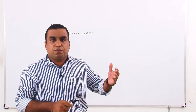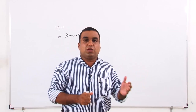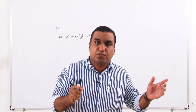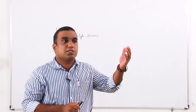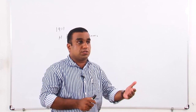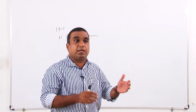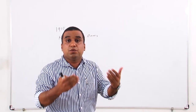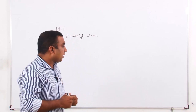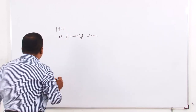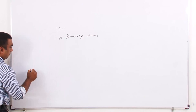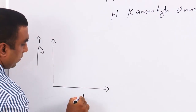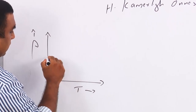Before going into the details of superconductivity, we can discuss the variation of resistance with temperature in the case of semiconductors, normal metals, and metals with high resistance — that is, metals which we use as resistors. If we take the case of Nichrome, the variation of resistivity with temperature is like this.